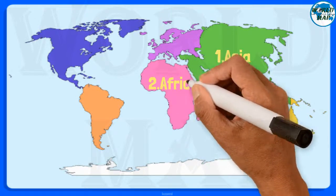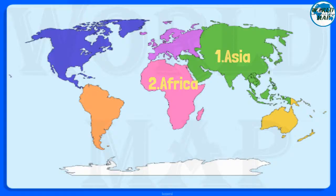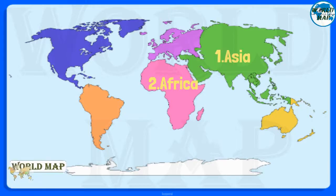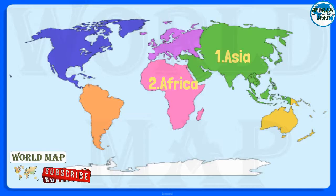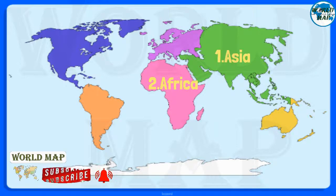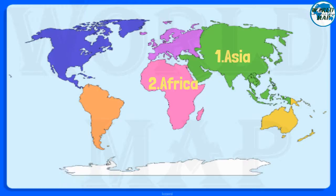Number 2: Africa. It is the second largest continent in the world after Asia, both by area and population. It comprises 54 countries and over 16% of the world's population.